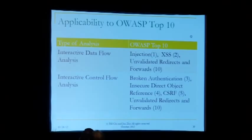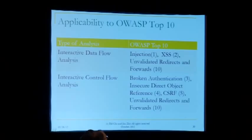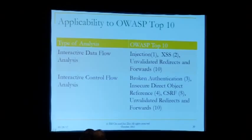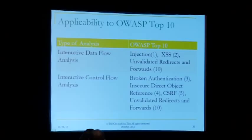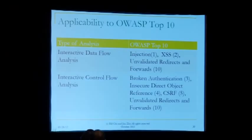We did a mental mapping of our approach against the OWASP Top 10. Obviously injection attacks — we can address those with interactive data flow analysis. Cross-site scripting, and some parts of unvalidated redirects and forwards. With control flow analysis, we can do broken authentication, insecure direct object reference — when you reference an object we can say, where's your access control check? Annotation, CSRF. About 60% of the categories in the OWASP Top 10 can be, in some fashion, addressed by this interactive analysis.